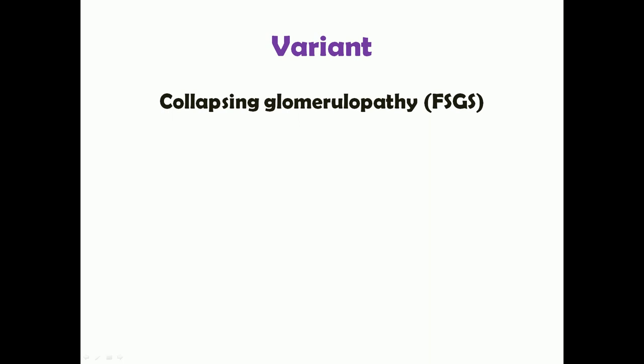There is an important variant called collapsing glomerulopathy, or the collapsing variant of focal segmental glomerulosclerosis. This form most commonly occurs in HIV-associated nephropathy. It is a very severe form of FSGS — patients are very refractory to treatment, the treatment response is not satisfactory, and the overall prognosis is very poor.